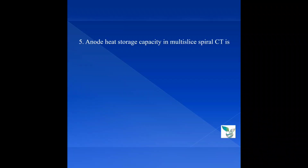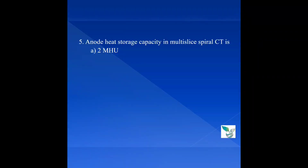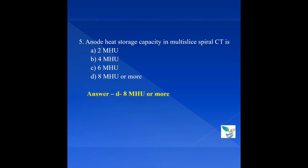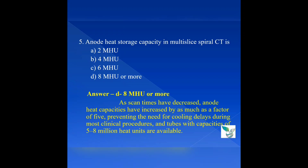Question 5: The anode heat storage capacity in multi-slice spiral CT is — Option A: 2 MHU (Mega Heat Units), Option B: 4 MHU, Option C: 6 MHU, Option D: 8 MHU or more. The answer is Option D: 8 MHU or more. As scan times have decreased in spiral CT with continuous motion of the X-ray tube and detector, the anode heat capacity has increased by as much as a factor of 5, and tubes with capacities of 5 to 8 million heat units are available.